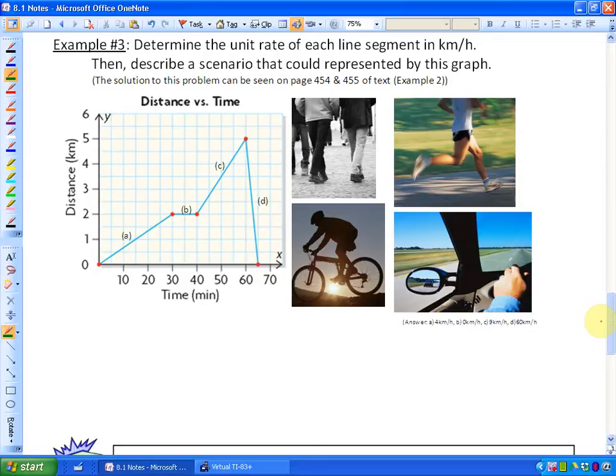The question says determine the unit rate of each line segment in kilometers per hour, then describe a scenario that could be represented by this graph. So we're going to look at the first part. First there's four different segments here.